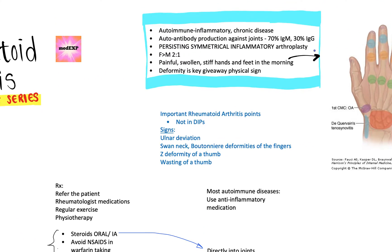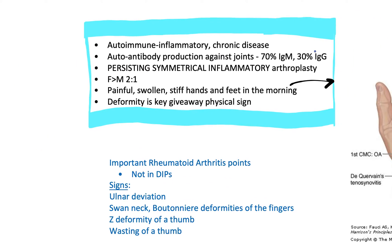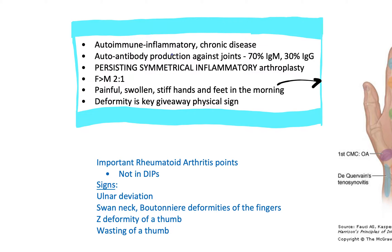So what is rheumatoid arthritis? Rheumatoid arthritis is an autoimmune inflammatory chronic disease. Every single word in that sentence is very important: autoimmune, inflammatory, and chronic. It is a progressive disease. The changes appear chronically and progressively, and they start off with systemic signs as well, such as fever and malaise.